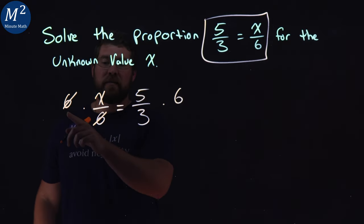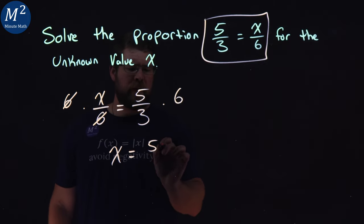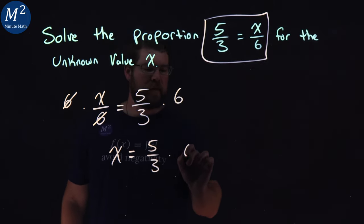This eliminates the 6 on the left. It cancels out. And we have x here equals, well, let's write it out, 5 over 3 times a 6.